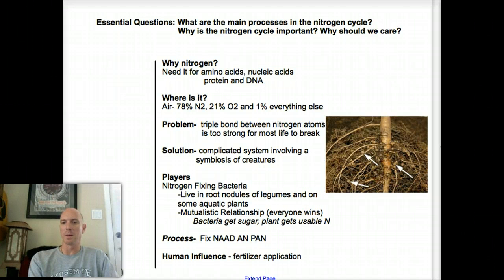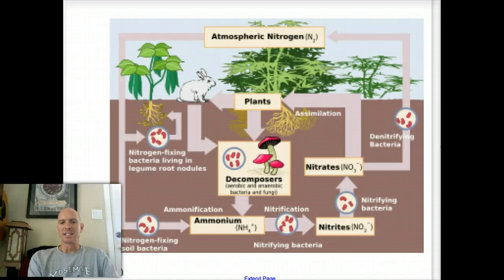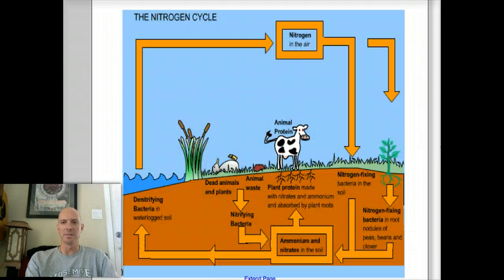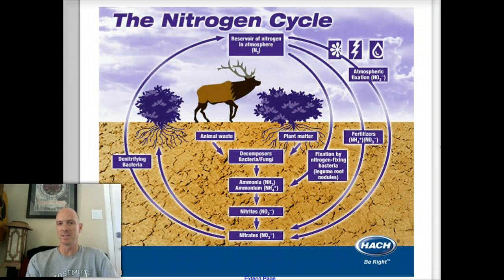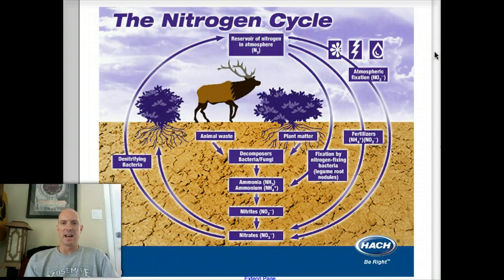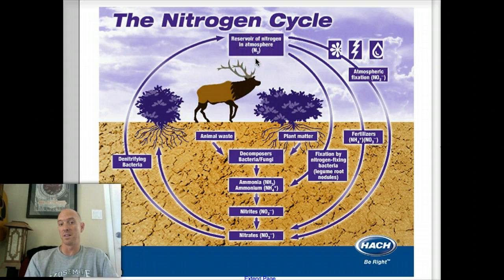I scoured the internet and found there are a whole bunch of nitrogen cycle diagrams out there — they're not all good. Once it's all said and done, go back to those cycles and see if you can make sense of them. I'm going to walk you through this one. We're going to start up here at the storage spot — the store of nitrogen is in the air. Seventy-eight percent of air is nitrogen gas. We're going to start there.